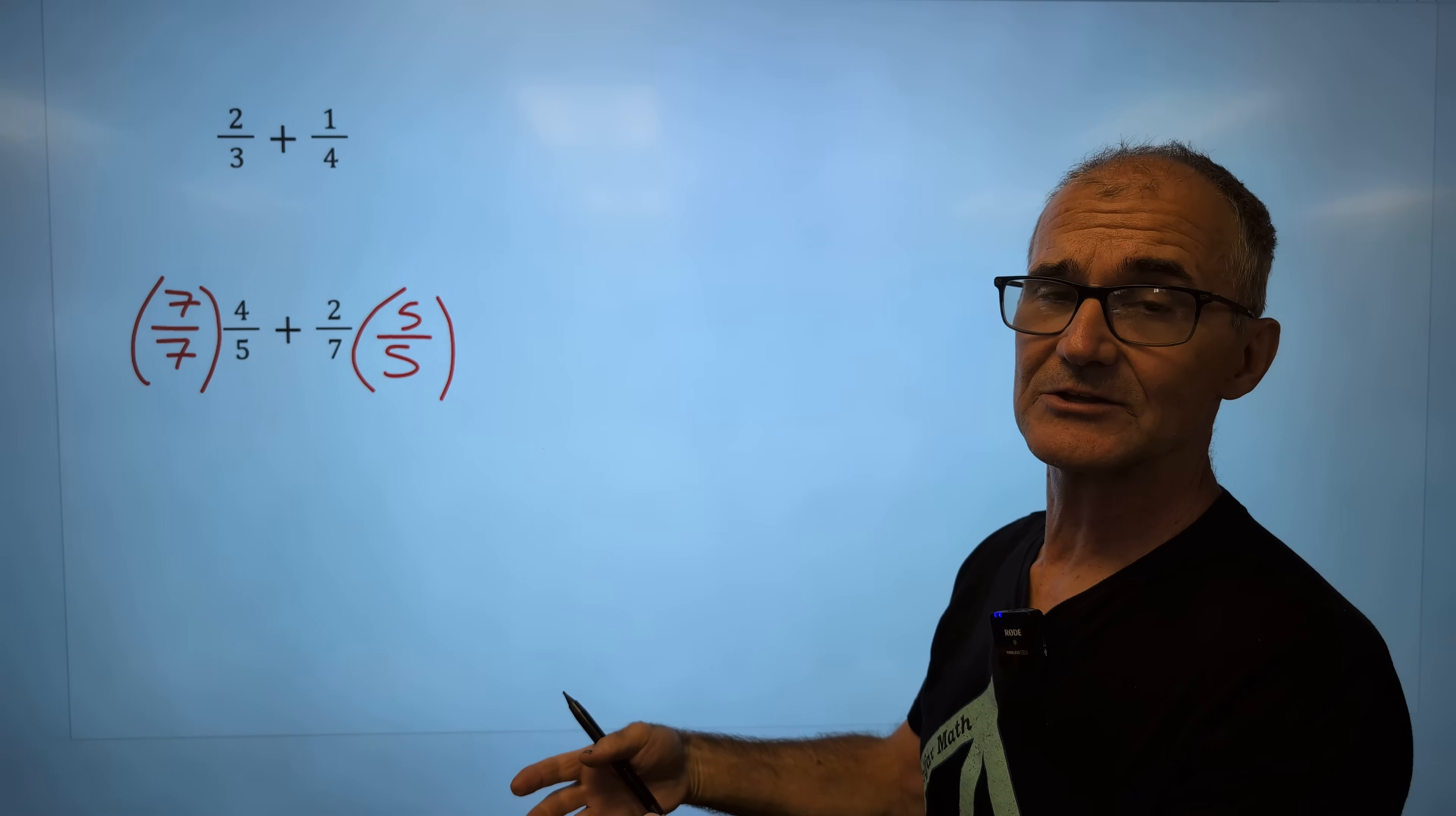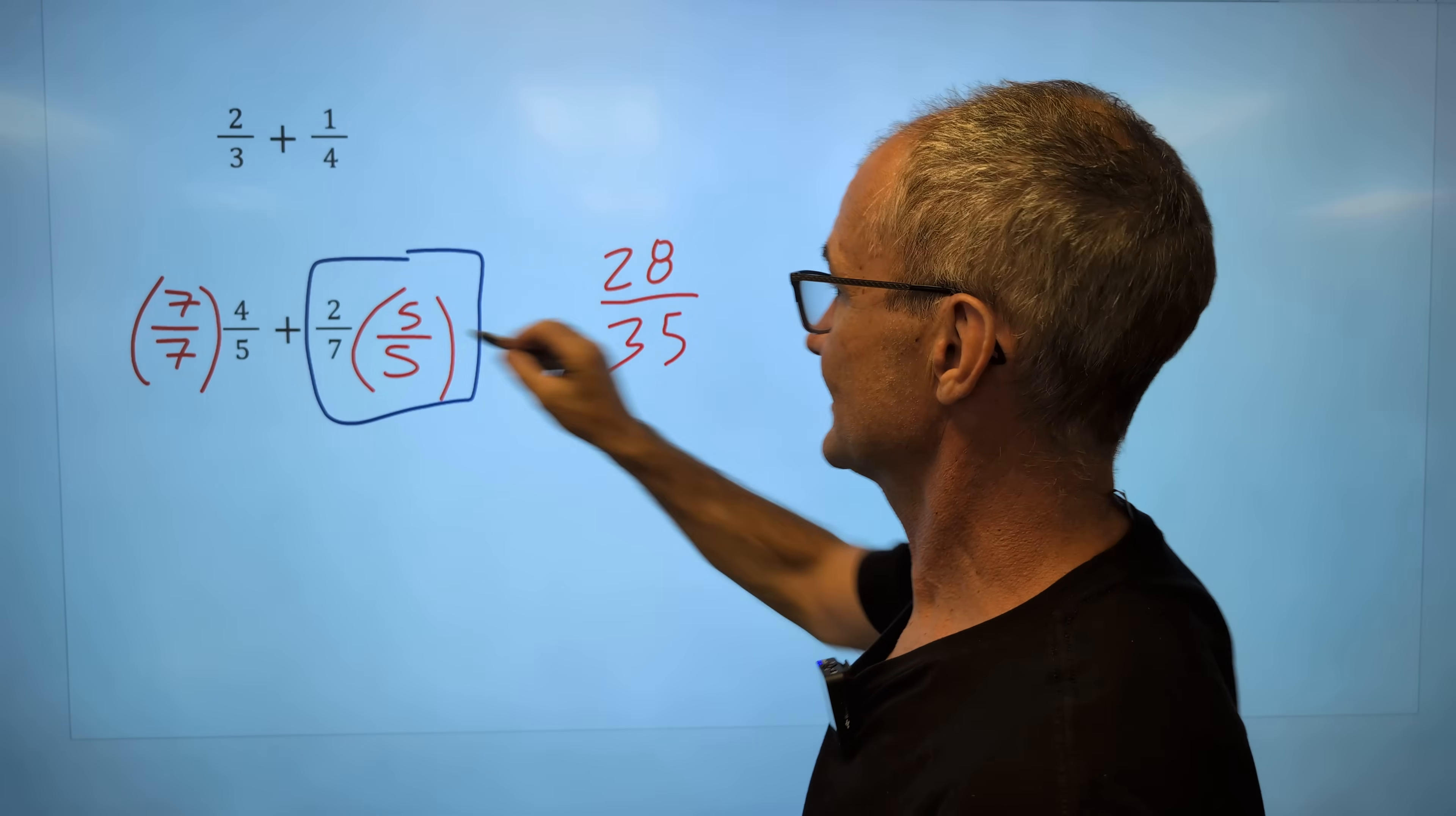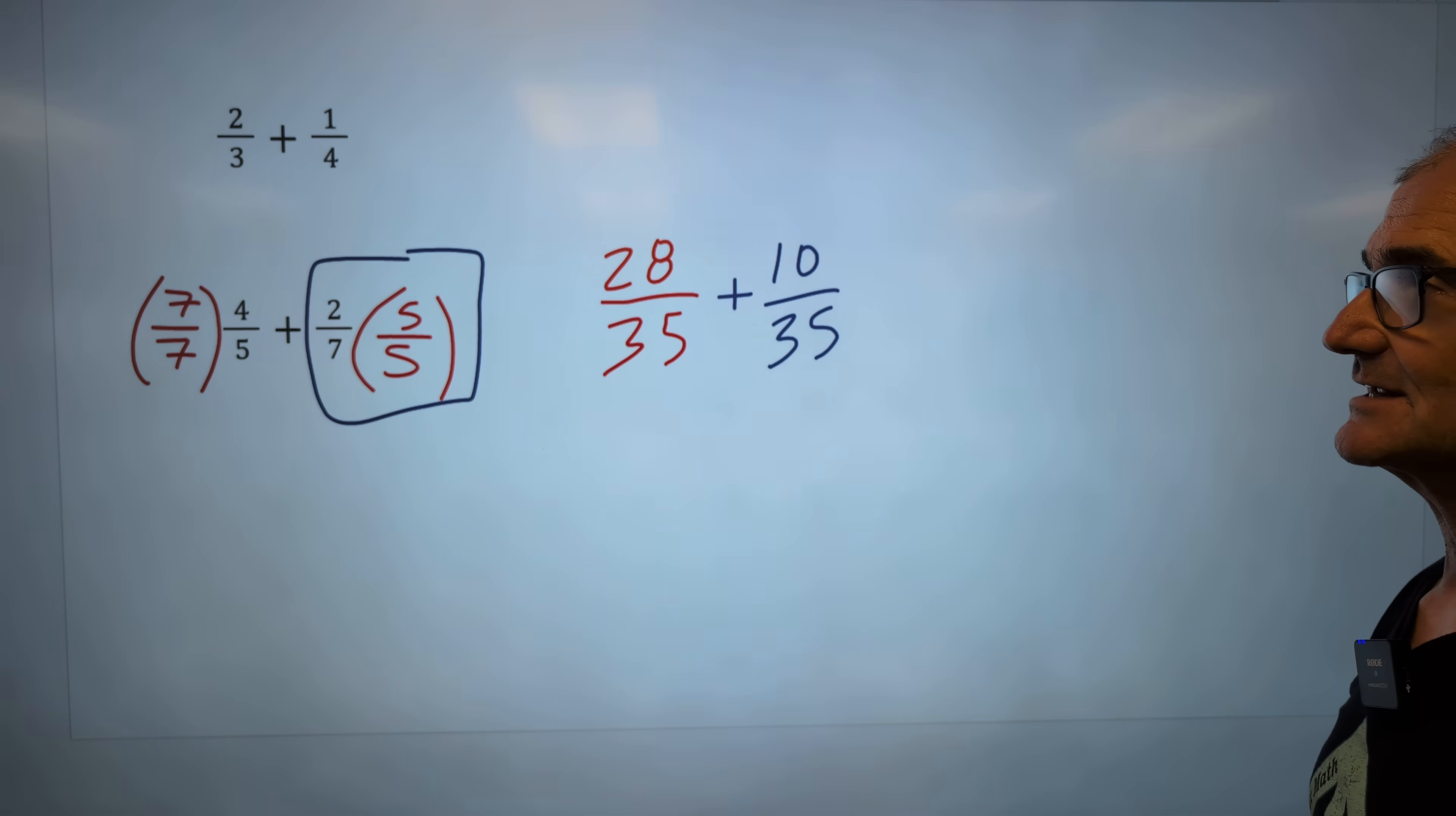I am multiplying my first fraction by one. It is not changing the value of it. It is only giving me a new equivalent. Seven times four is twenty-eight. Seven times five is thirty-five. My second fraction, two times five is ten. Seven times five is thirty-five. This is the equivalent of two-sevenths.